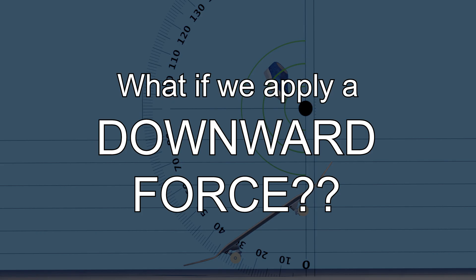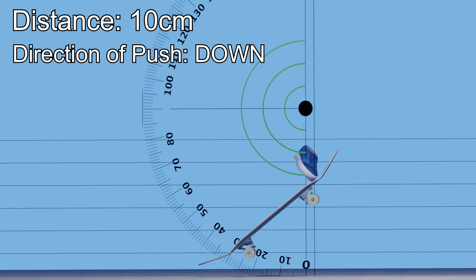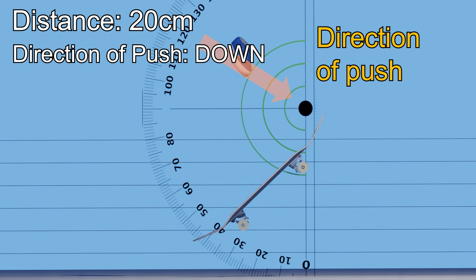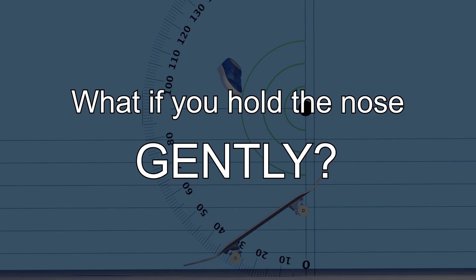What if we apply more of a downward force? We'll see what happens if you push the nose from 120 degrees. If you apply only a small force, the board will fall as if nothing had happened. With a strong force instead, it pushes the board down against the board's upward momentum. What if you hold the nose more gradually or gently?